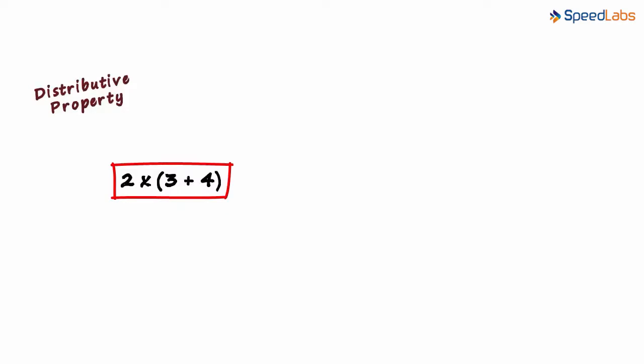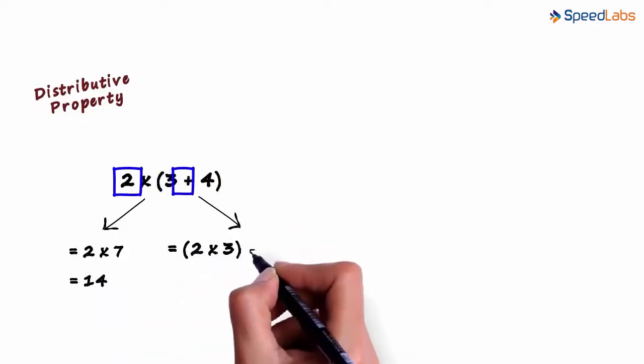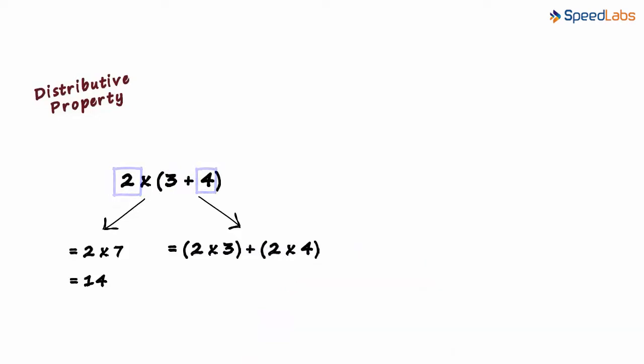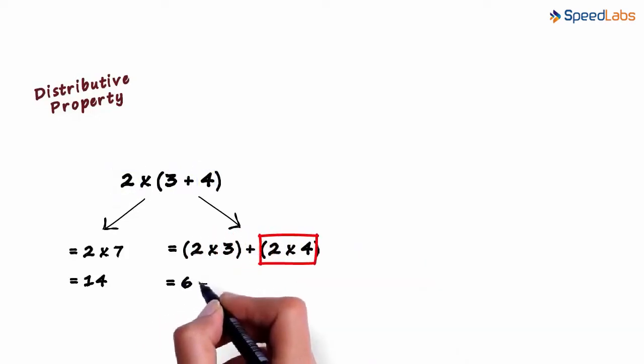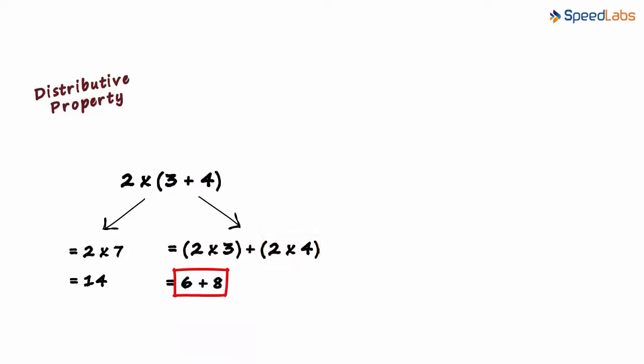Look at this expression: 2 multiplied by 3 plus 4. 3 plus 4 can be written as 7, and 2 multiplied by 7 gives us 14. Else we can also write this expression as 2 multiplied by 3 plus 2 multiplied by 4. 2 times 3 is 6 and 2 times 4 is 8. The expression will equal 6 plus 8, which also equals 14. Both ways gives us the same answer.